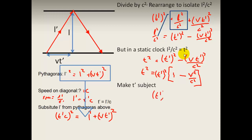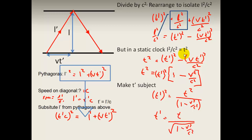We make T prime the subject. Dividing both sides by one minus V squared over C squared, T prime squared equals T squared divided by one minus V squared over C squared. Taking the square root of everything: T prime equals T divided by the square root of one minus V squared over C squared. This is called the Lorentz factor.